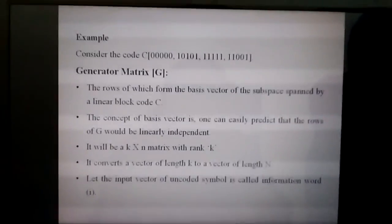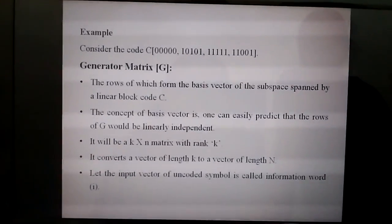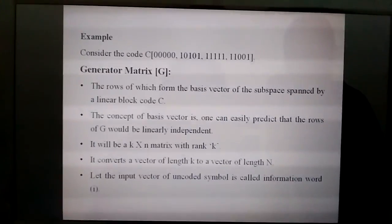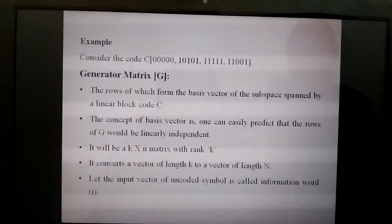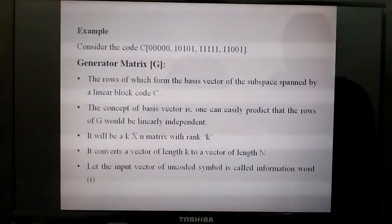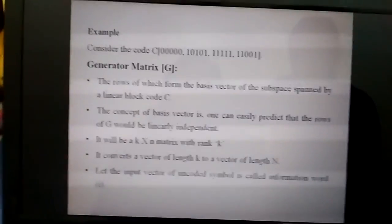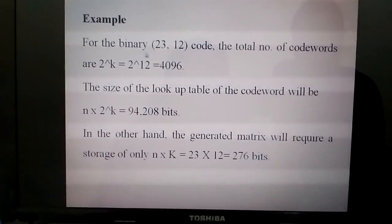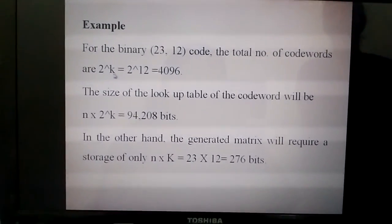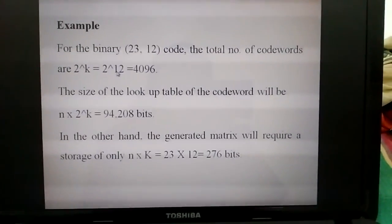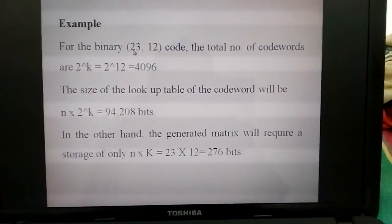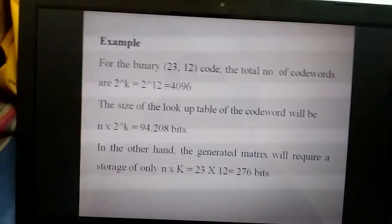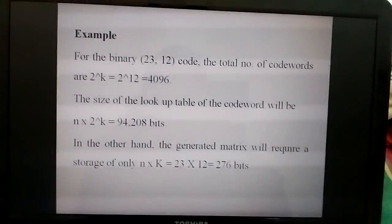To solve problems in linear block codes, we need to know four things: generator matrix, parity check matrix, syndrome, and error pattern. For example, for the binary (23, 12) code, the total number of code words is 2^k, which is 2^12 = 4096. Binary codes are represented as (n, k) codes, where n is the total bits and k is the message bits.